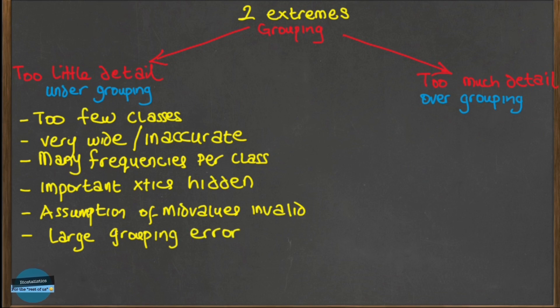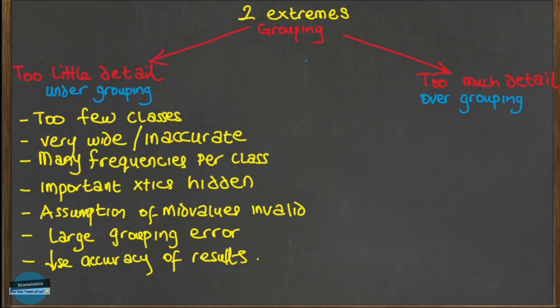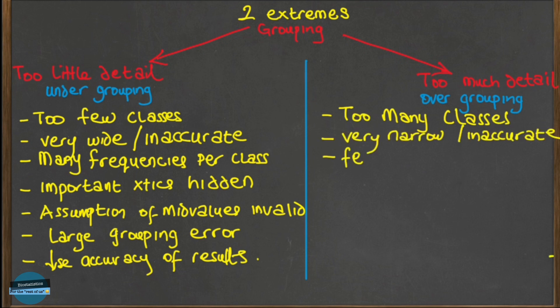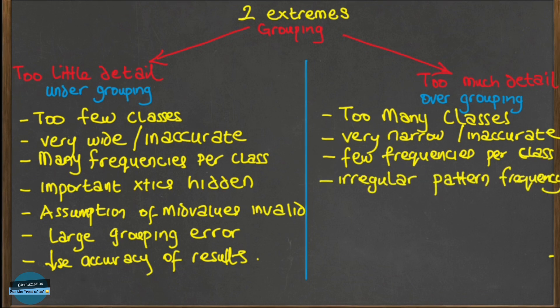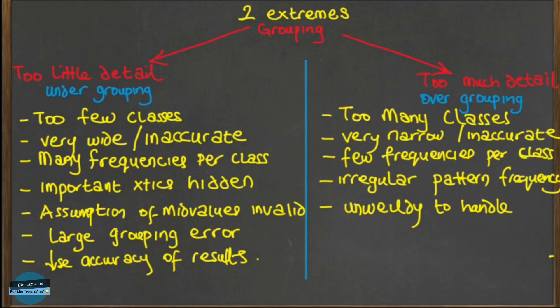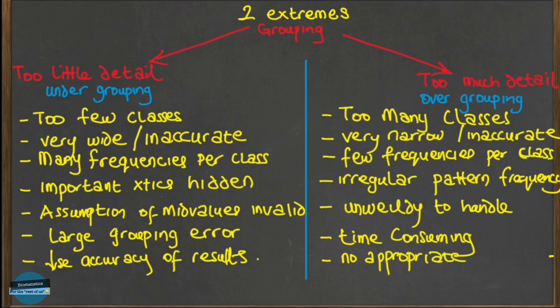We always want to minimize the grouping error, and generally the accuracy of results decreases as the number of classes becomes smaller. On the other extreme, over-grouping occurs when you categorize data into too many classes. This results in too few frequencies in each class, often giving an irregular pattern of frequencies and making the frequency distribution irregular. A large number of classes renders the distribution unwieldy and difficult to handle, defeating the purpose of grouping — which is to summarize the data — and making computational work unnecessarily tedious and time-consuming without any additional gain in accuracy.